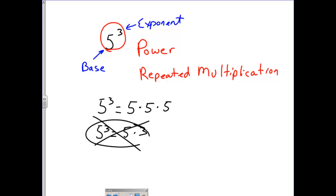That's a very common mistake for middle school students. So 5 to the third is equal to 5 times 5 times 5, which equals 125.